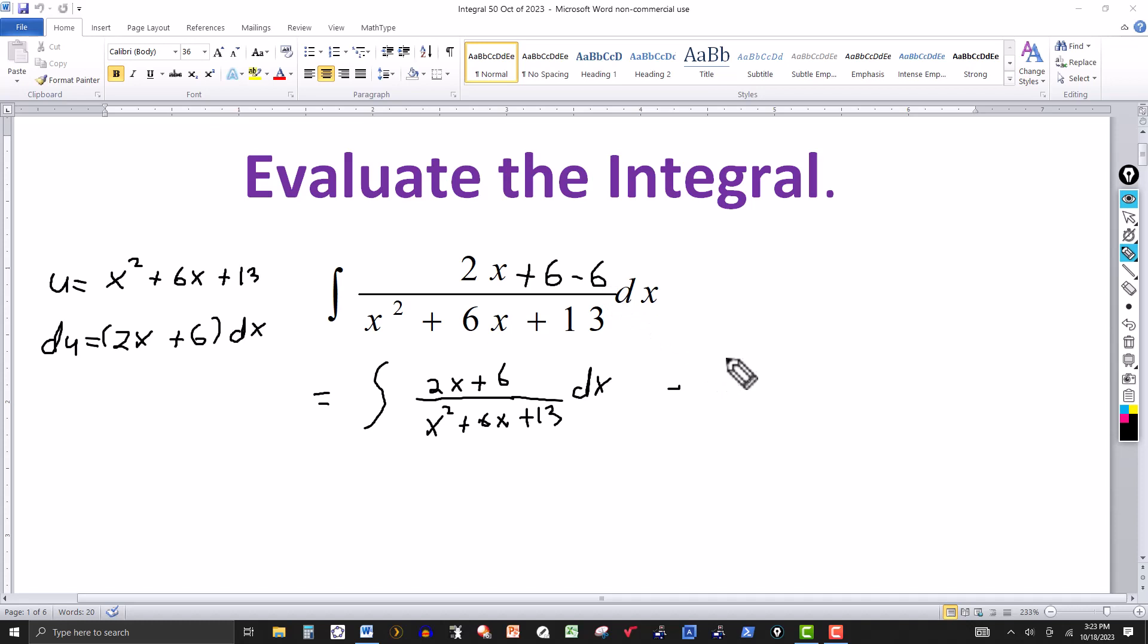Then I'll have a minus. There's a minus 6 here. I'll write it this way. This will be x squared, x squared plus 6x plus 13. I got a dx here. That's the same integral. If I recombine these integrals, I get the given integral of 2x over x squared plus 6x plus 13.